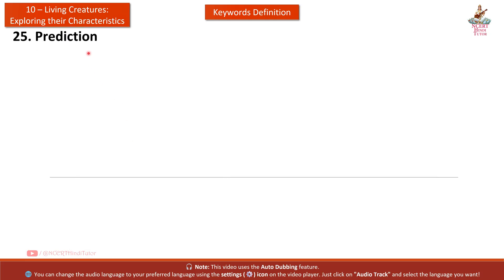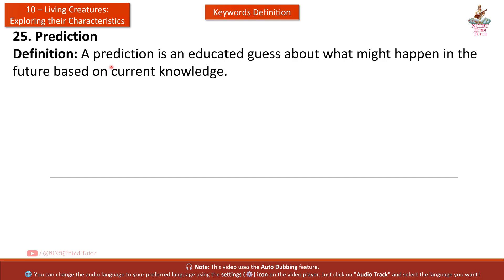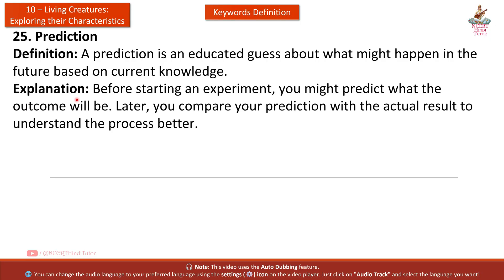Twenty-fifth: Prediction. Definition: A prediction is an educated guess about what might happen in the future, based on current knowledge. Explanation: Before starting an experiment, you might predict what the outcome will be. Later, you compare your prediction with the actual result to understand the process better.